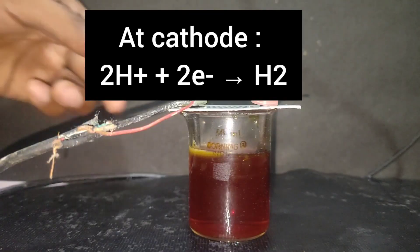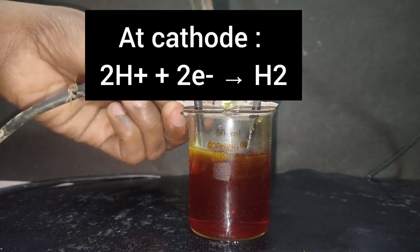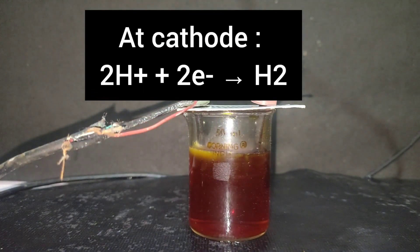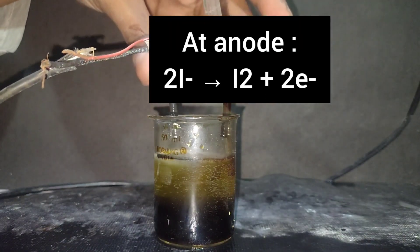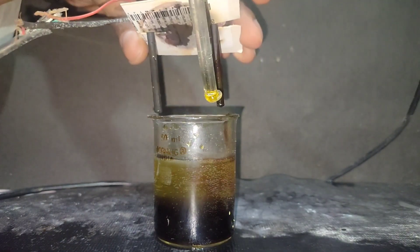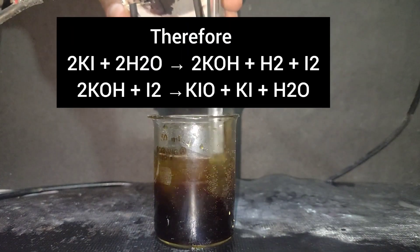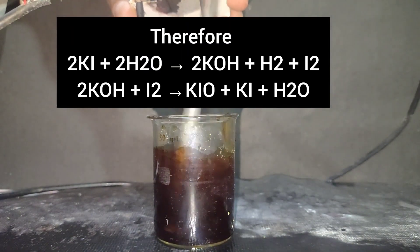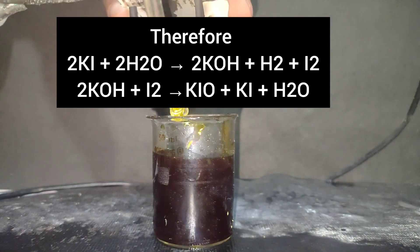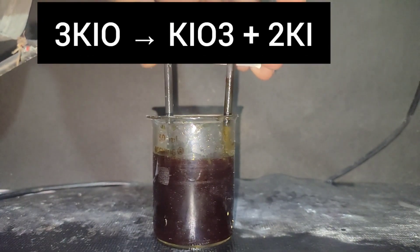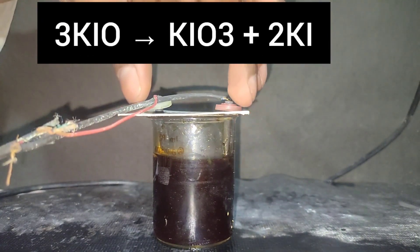So what's happening here is, the H-plus ions are getting reduced at cathode to hydrogen and the iodide ions are getting oxidized to iodine at anode. Now potassium hydroxide is formed in the solution, which reacts with iodine to form potassium hypoiodite, which further disproportionates to potassium iodate and potassium iodide.